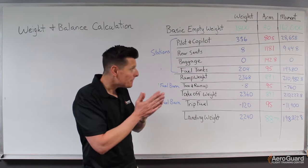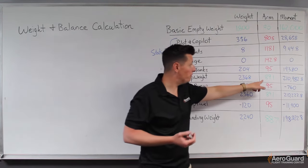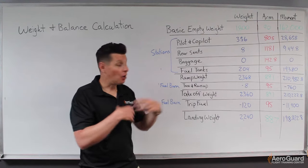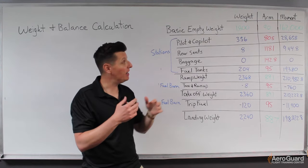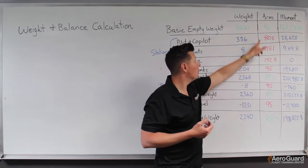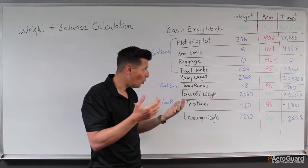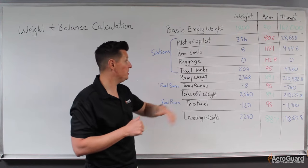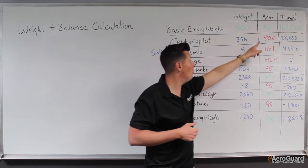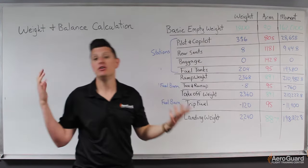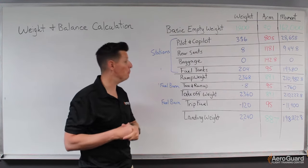We notice that the CG has moved. After we got on board and added the fuel, the CG moved from 90 to 89.1 inches, moving forward by 0.9 inches. This makes sense because the majority of the weight we added was in front of the center of gravity.